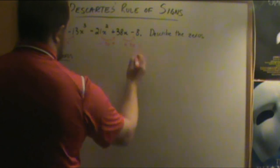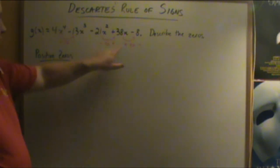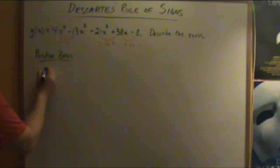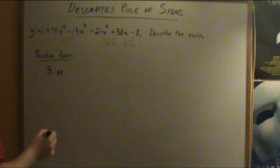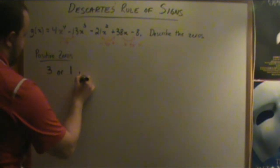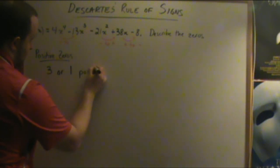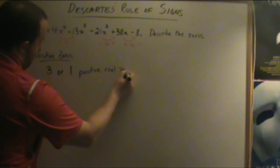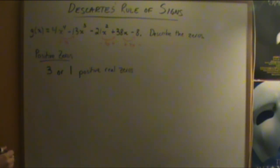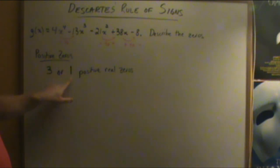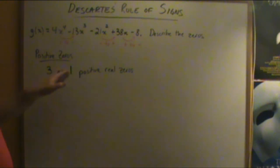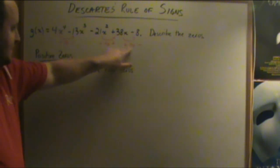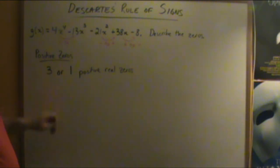So we have three variations in sign. There are therefore three, or three minus two equals one, positive real zeros. Once we find the number of sign changes, we subtract even numbers: from three we go to one. If we had five sign changes, we'd go five, three, or one. In this case, with three sign changes, it's either three or one positive real zeros.